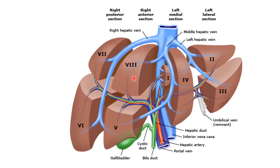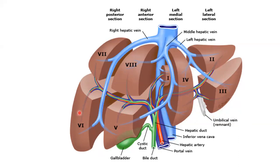The right hepatic vein divides the right lobe into anterior and posterior segments. The left hepatic vein divides the left lobe into medial and lateral parts. The portal veins divide the liver into superior and inferior compartments. The right and left portal veins branch superiorly and inferiorly to run in the center of each segment. Segments are numbered in the Couinaud system in a clockwise direction, starting from segment one through to segment eight.